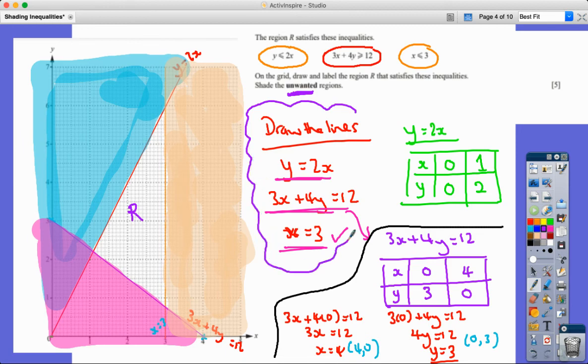So just going through this again. First job is to draw the lines, the boundary lines, and then once we've got those lines in and labeled hopefully, so we don't forget which one's which, then we're going to analyze - are we looking below? Yes, we were in this case. Are we looking above? Yes, we were in this case. And below again, less than here. And that should leave, once we've shaded out the stuff we don't want, leave you a certain region.